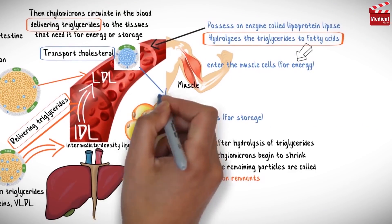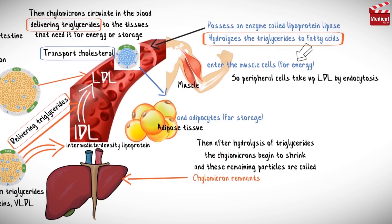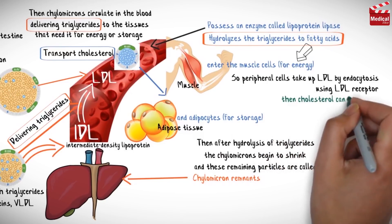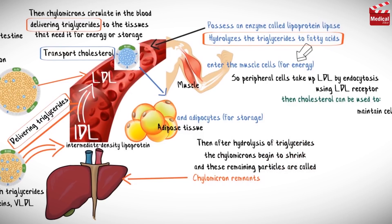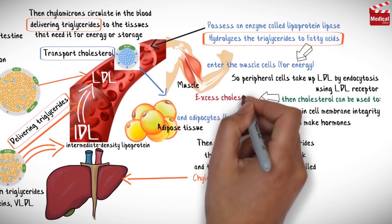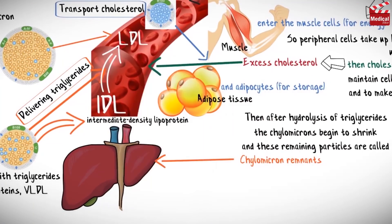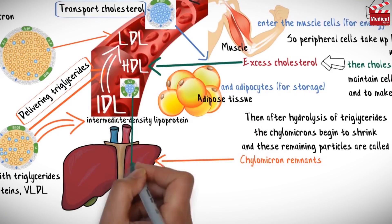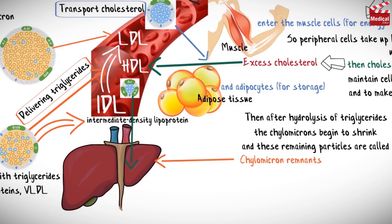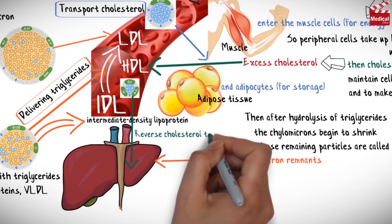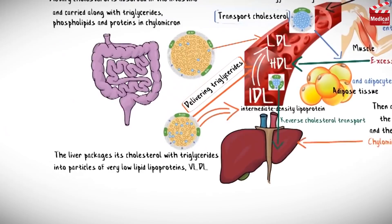Peripheral cells take up LDL by endocytosis using LDL receptors, then cholesterol can be used to maintain cell membrane integrity and to make hormones. Excess cholesterol is then exported from the cells and delivered to high density lipoprotein, HDL.